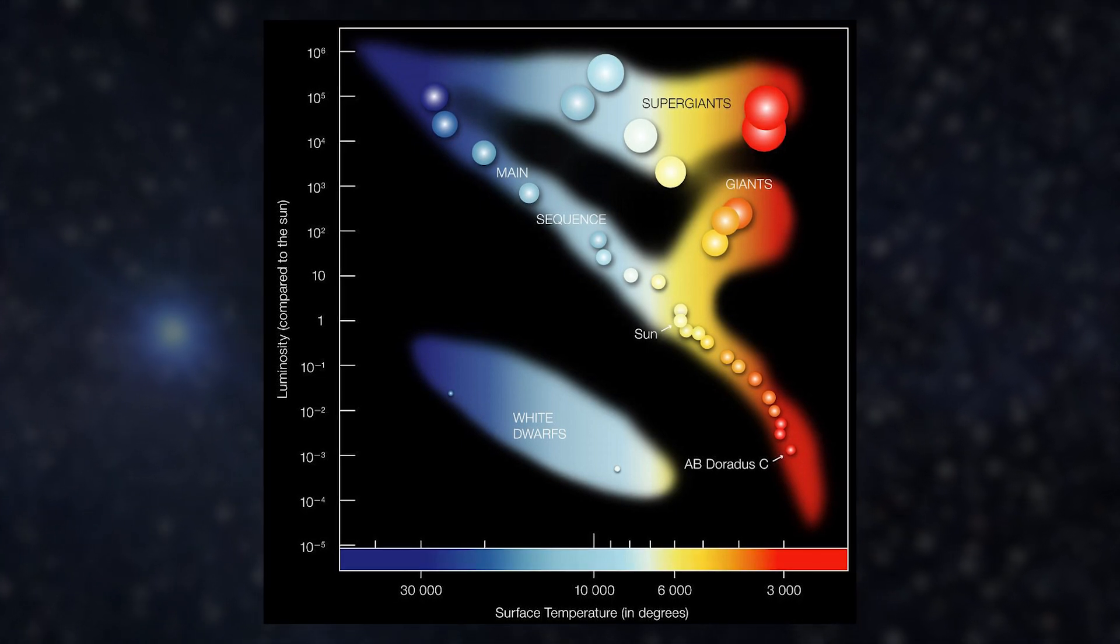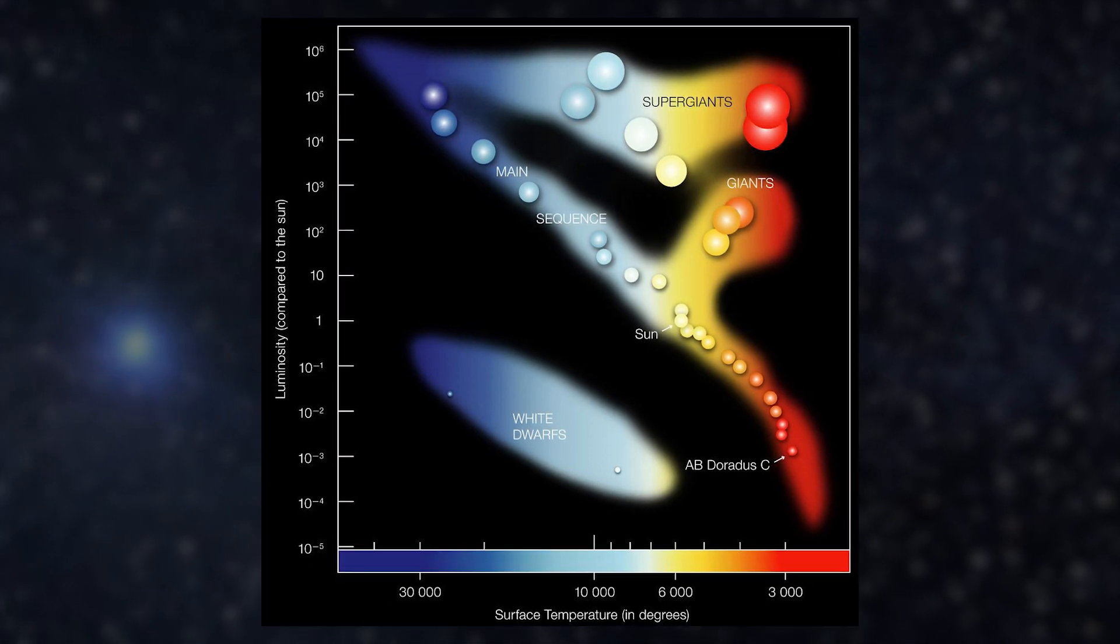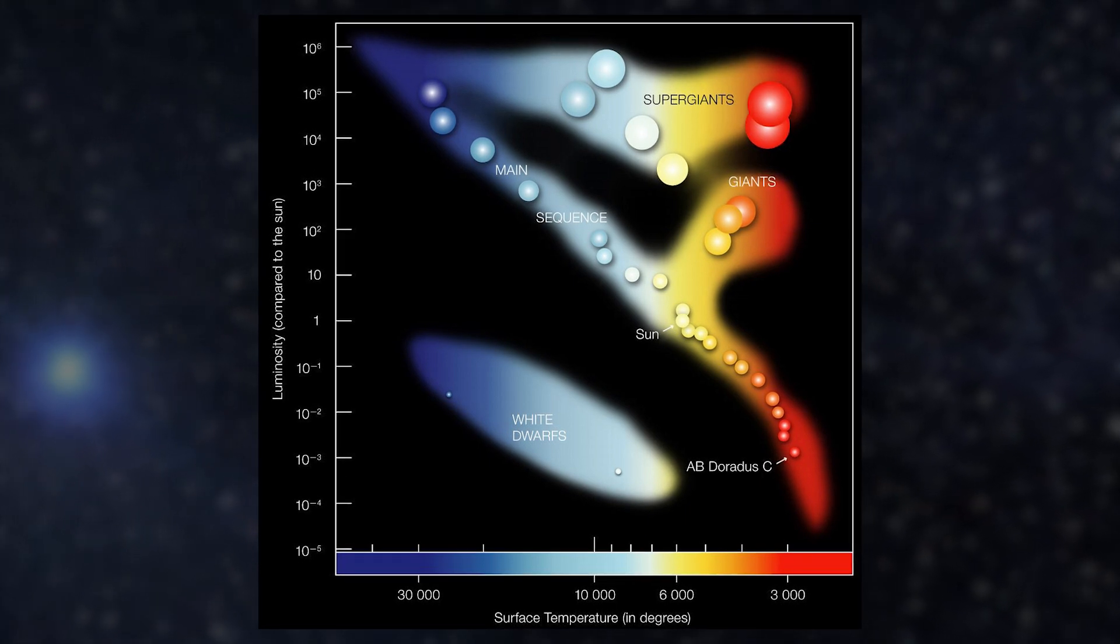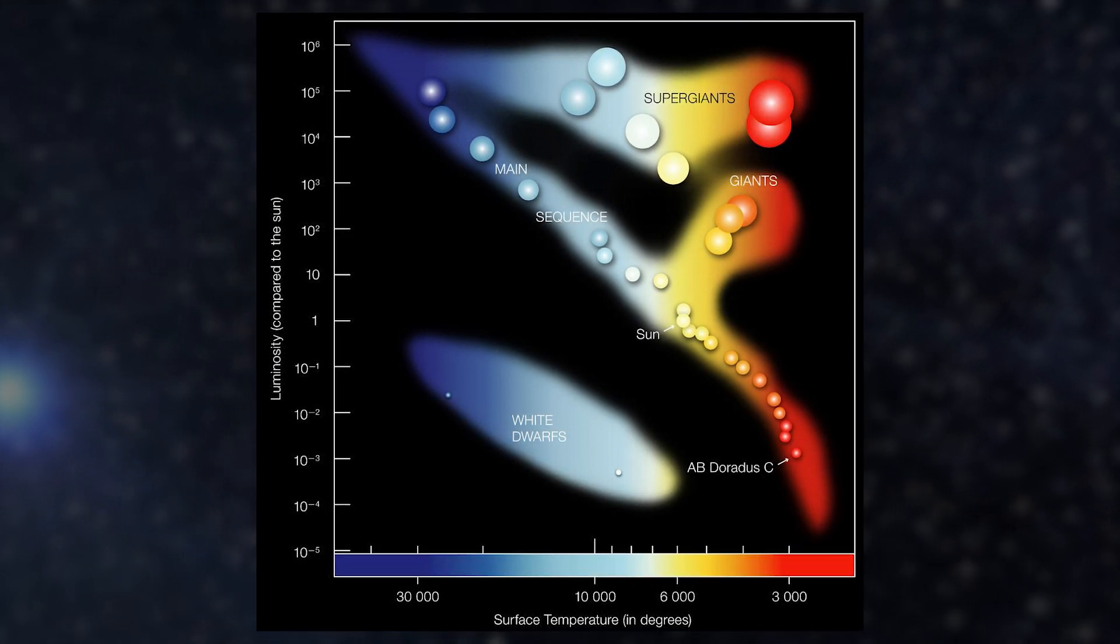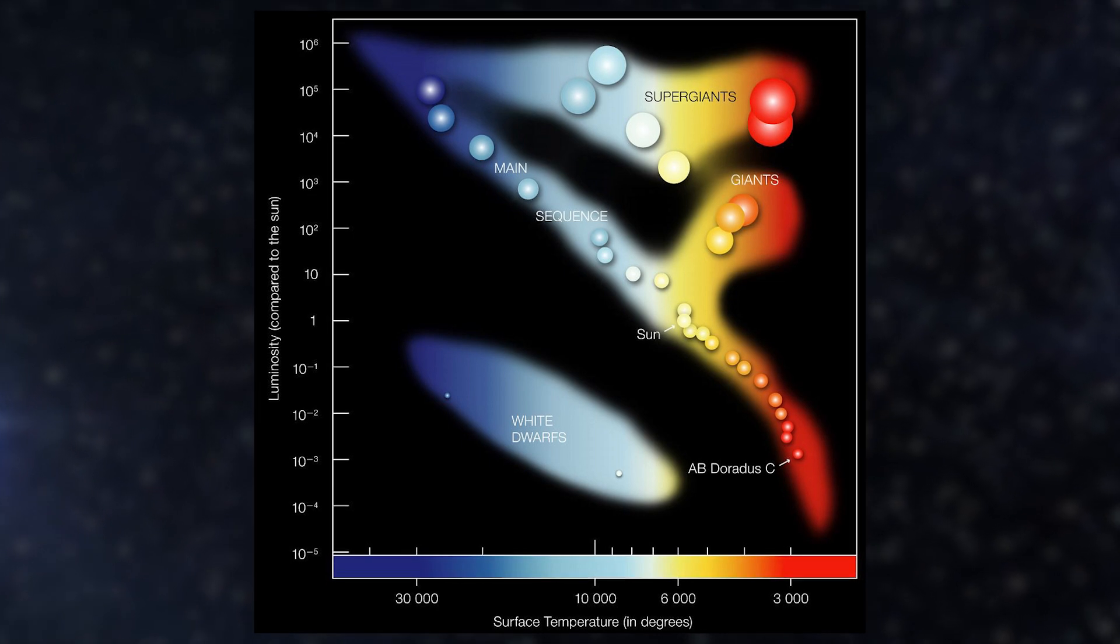Hotter stars are bluish, while colder ones have redder colors. Our sun is right in the middle, being known as the yellow dwarf, more specifically, a G2V type star.